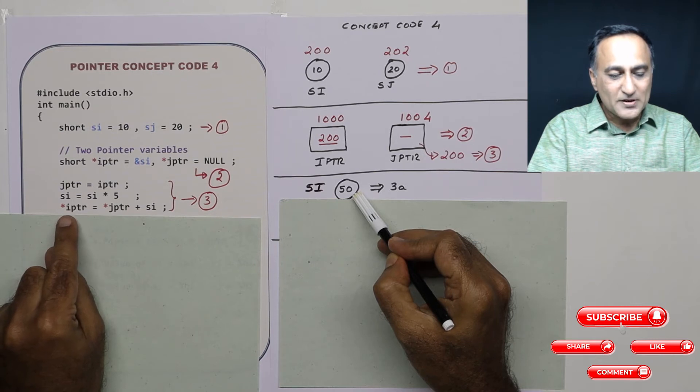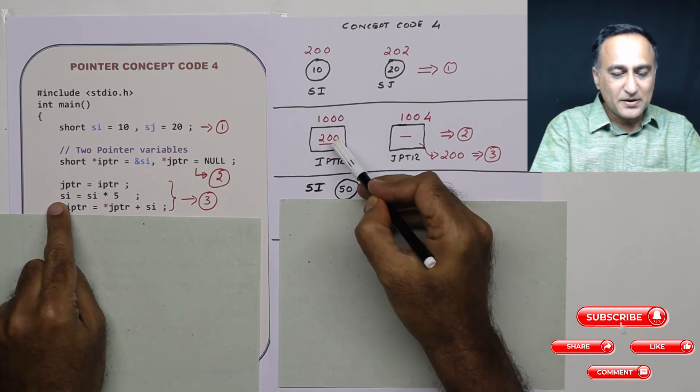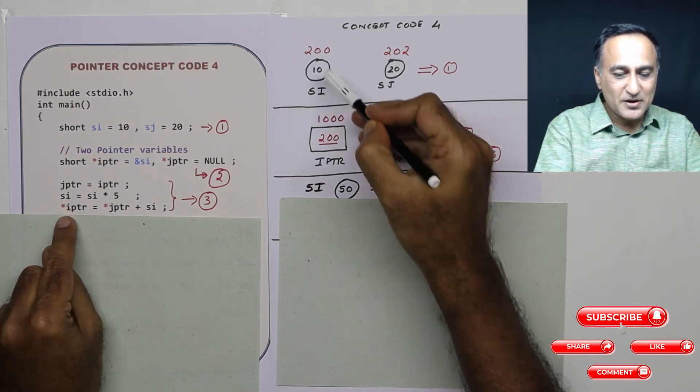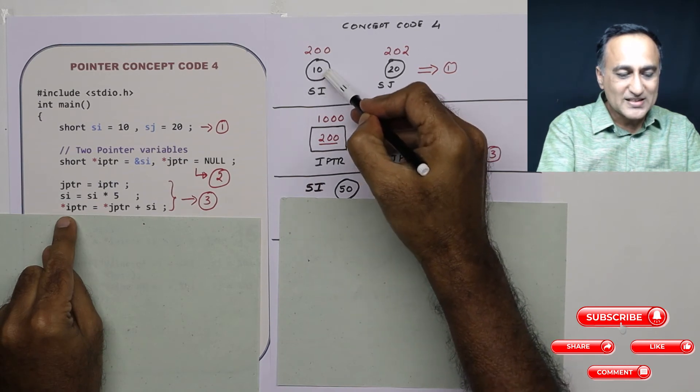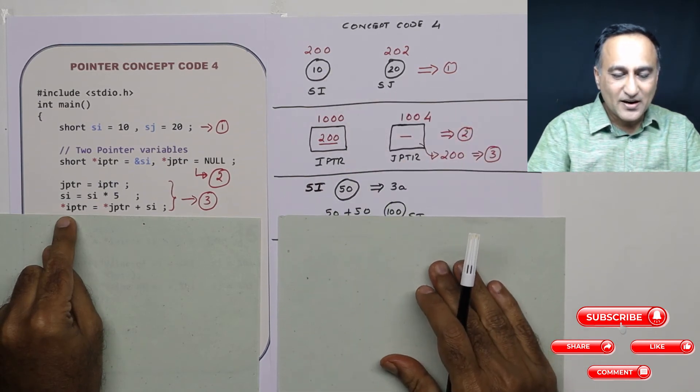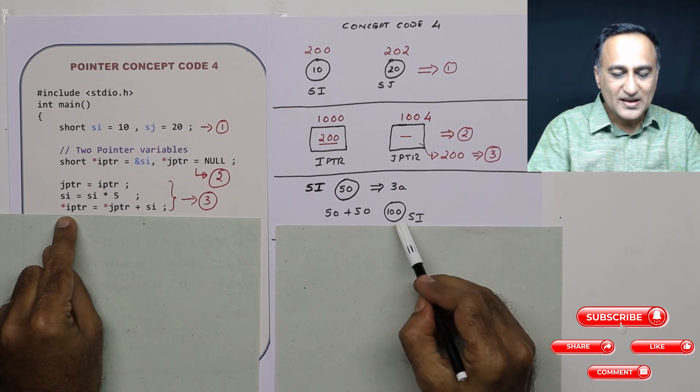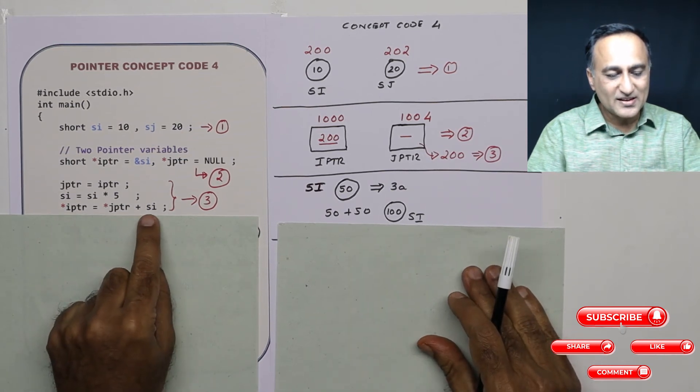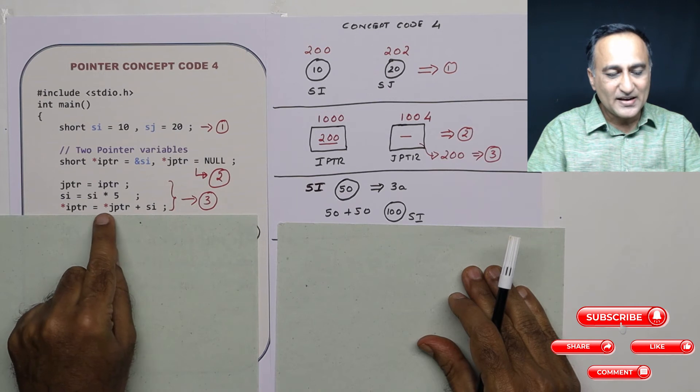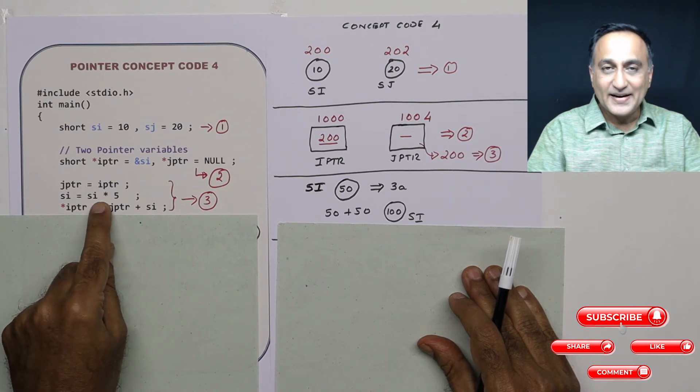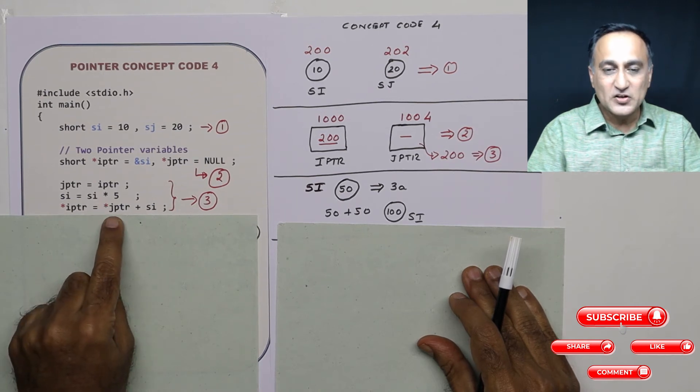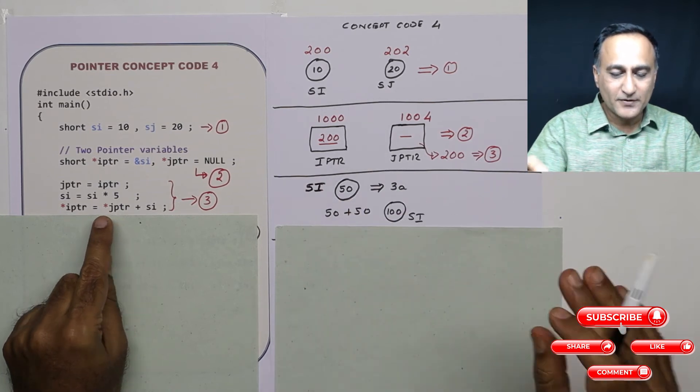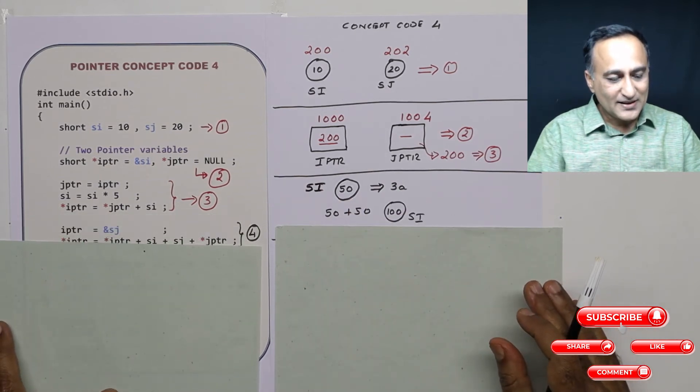And what is IPTR? IPTR is 200. Star IPTR is referring to this. So SI now ends up becoming 100. So here you see SI has now become 100 because it's taken the old value of SI and the address referred to by JPTR which happened to be 50. Now let's come to the next step.